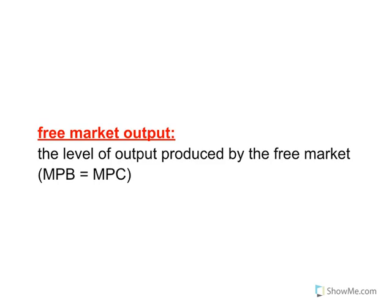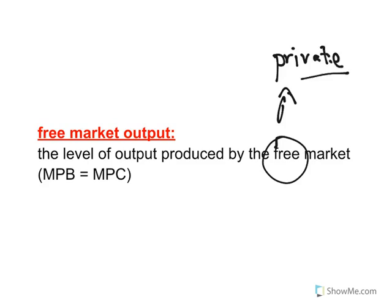The level of output produced by the free market is where marginal private benefit equals marginal private cost — that is the free market level of output. It may or may not be the socially efficient, or allocatively efficient, level of output, but it is the output actually going to be produced by the free market. That's the equilibrium quantity we were calculating way back in unit two, where supply and demand intersect.